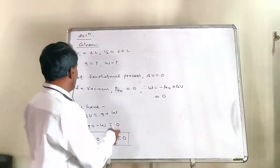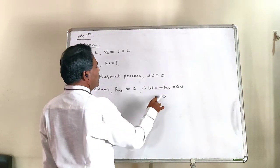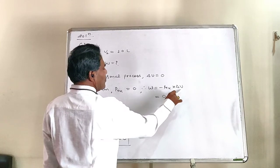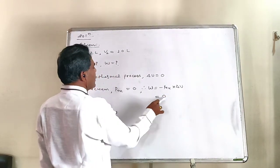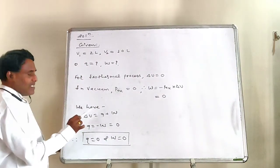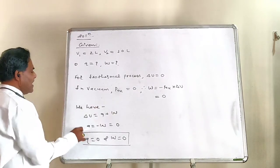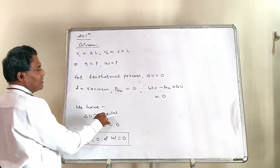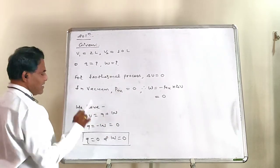Yahan oppose karne waala pressure hota hai nahi hai vacuuming. And that's why, work done W will be equal to minus P external into volume change. Volume change kush bhi hone to, opposing pressure is zero. So work done is also zero. Now we have first law of thermodynamics as delta U equals to Q plus W. Nekin ya, delta U is zero hai, W be zero hai. So Q equals to minus W, that is zero.